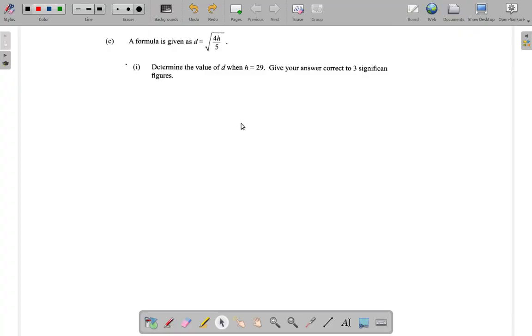Part C of question 2. A formula is given as D equals the square root of 4H divided by 5.